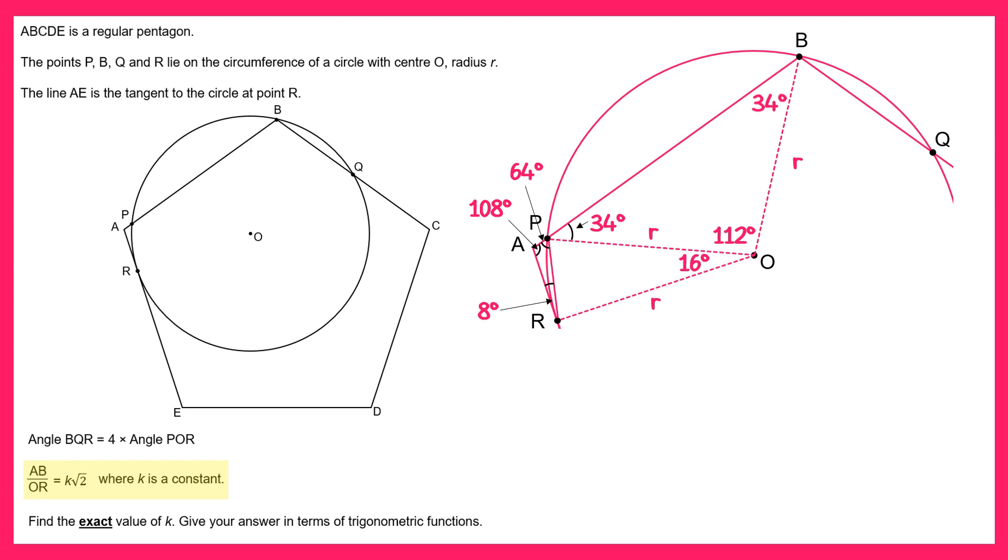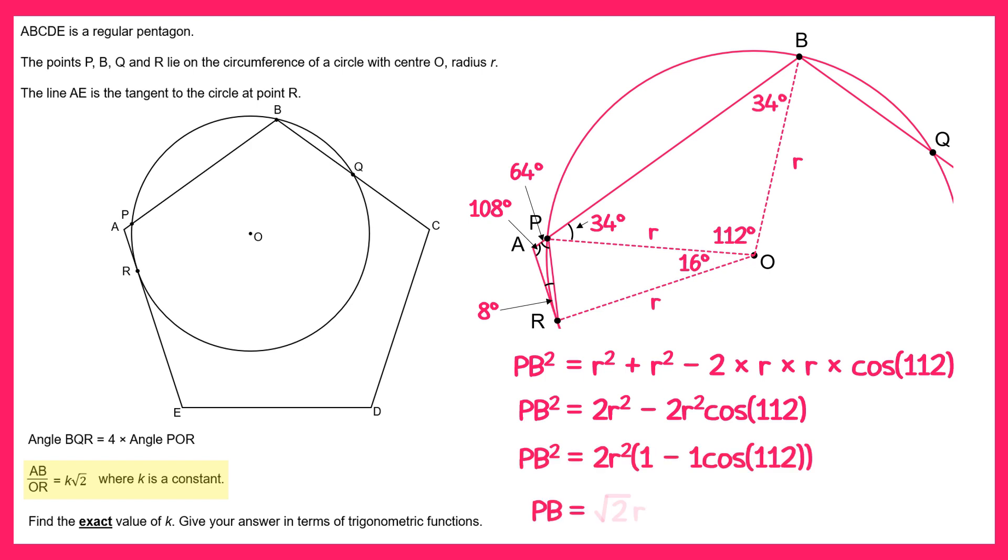We can then use the cosine rule once again to find the length of P to B. So PB squared will equal R squared plus R squared take away 2 times R times R times cos 112. If you simplify the right hand side you'll get this. Once again we'll factorise out the 2R squared and then square root both sides gives you PB equals square root 2 lots of R times the square root of 1 minus cos 112.